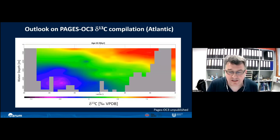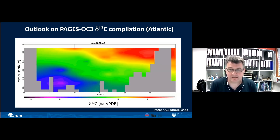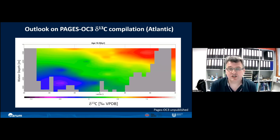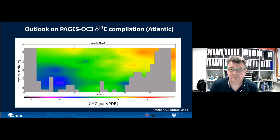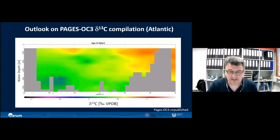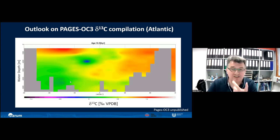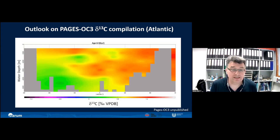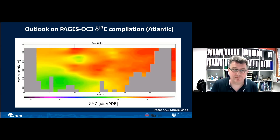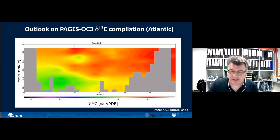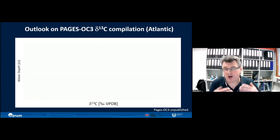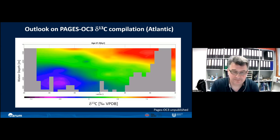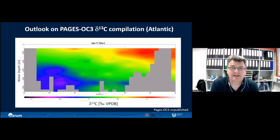As an outlook, I would like to show a film generated with PaleoDataMap showing the PAGES OC3 data — the evolution of δ¹³C in the Atlantic. We can nicely see that the deep low-δ¹³C water mass is eroded away during Heinrich Stadial 1; perhaps this is partly the CO2 we find in the atmosphere during Heinrich Stadial 1, until we get into the modern circulation pattern with deep North Atlantic Deep Water formation. This is all work in progress, but I hope we can produce similar films and datasets for the other oceans in PAGES OC3. Thanks a lot for your attention.